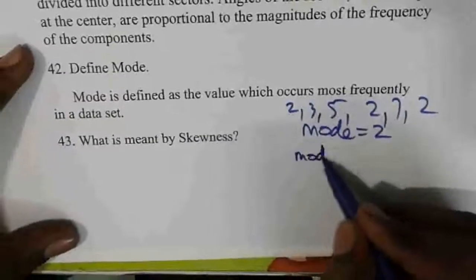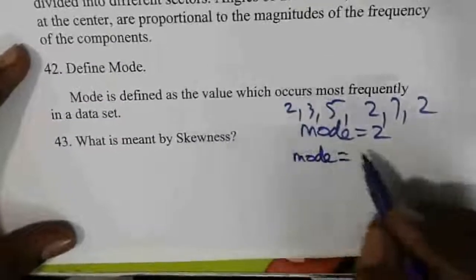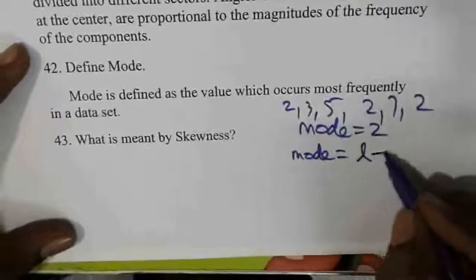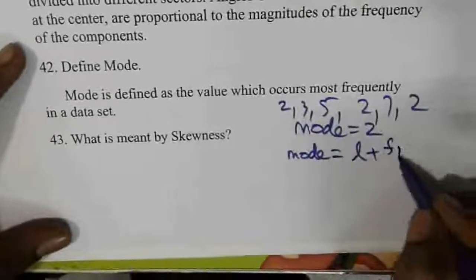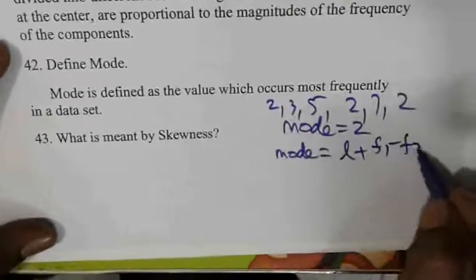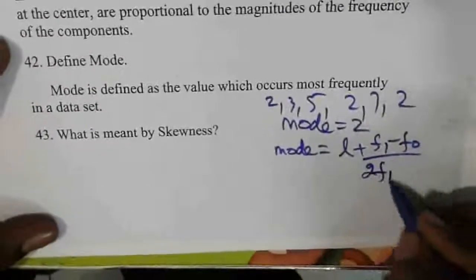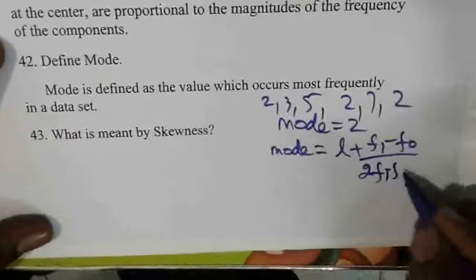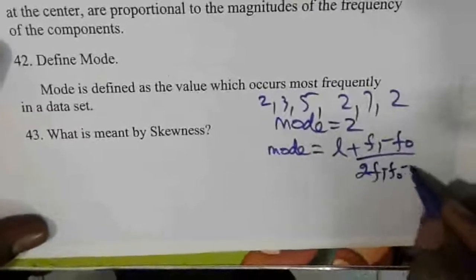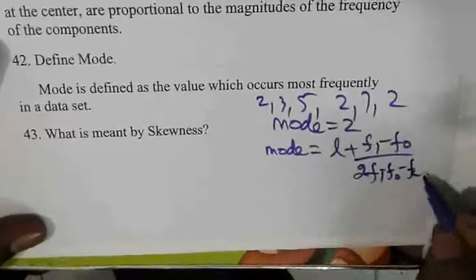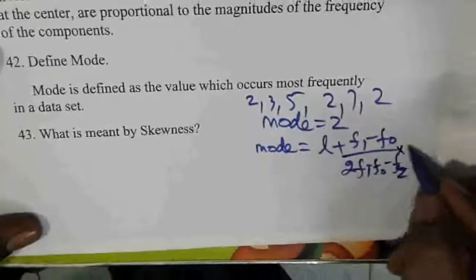For a continuous series, the mode formula is: Mode = L + (f1 minus f0) divided by (2f1 minus f0 minus f2), multiplied by c.